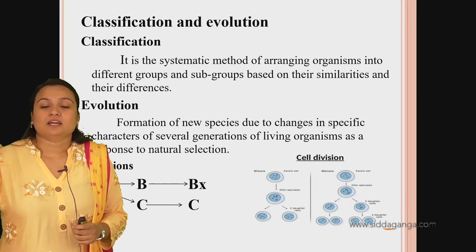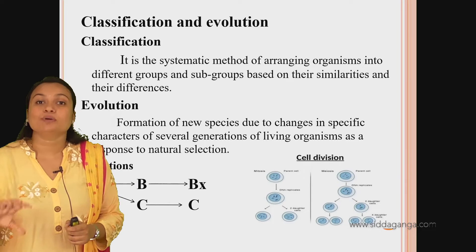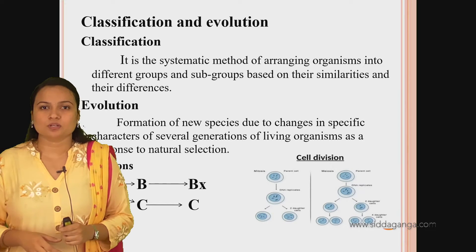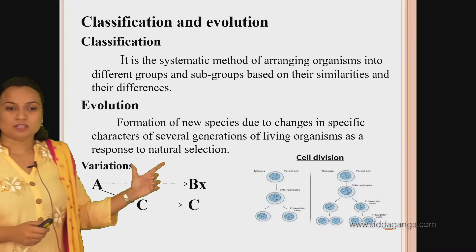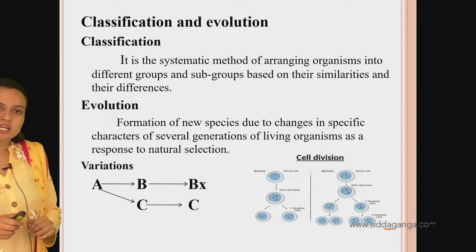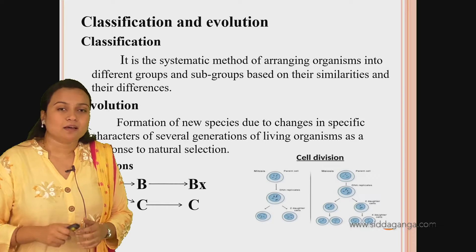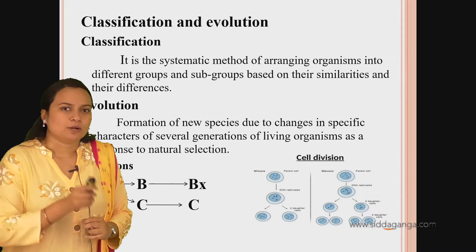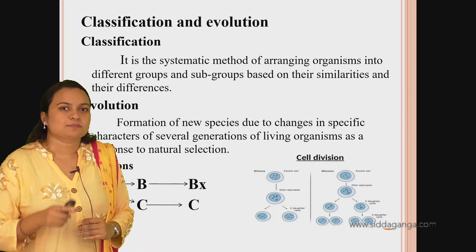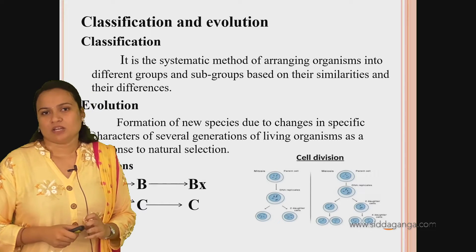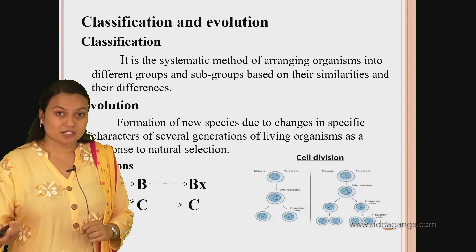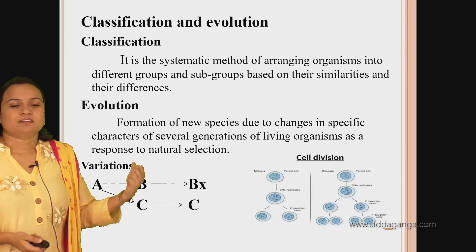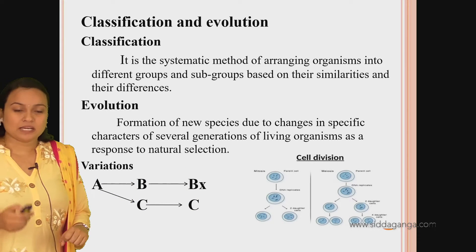This is called variation. Variation is due to error during DNA copying - the genetic material. While DNA copying, an error will take place and this error will lead to variation. Further, variations will lead to evolution.